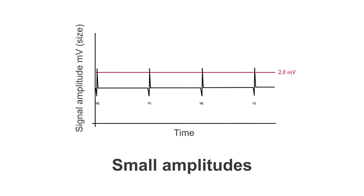The other issue of small signal amplitudes can be seen here. We have some ventricular complexes, but they're very small — they're only just over 2 millivolts, which is where our ventricular channel's sensitivity is set to.